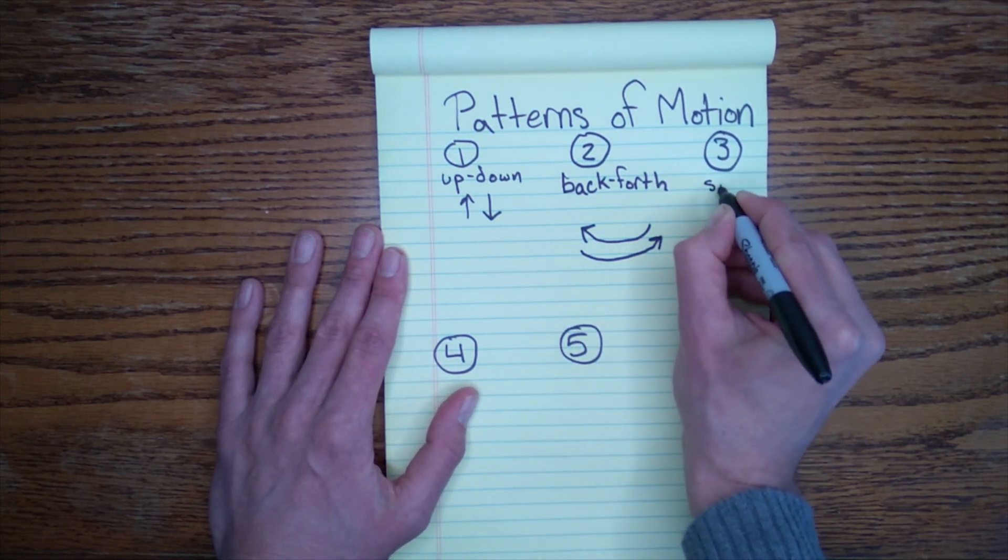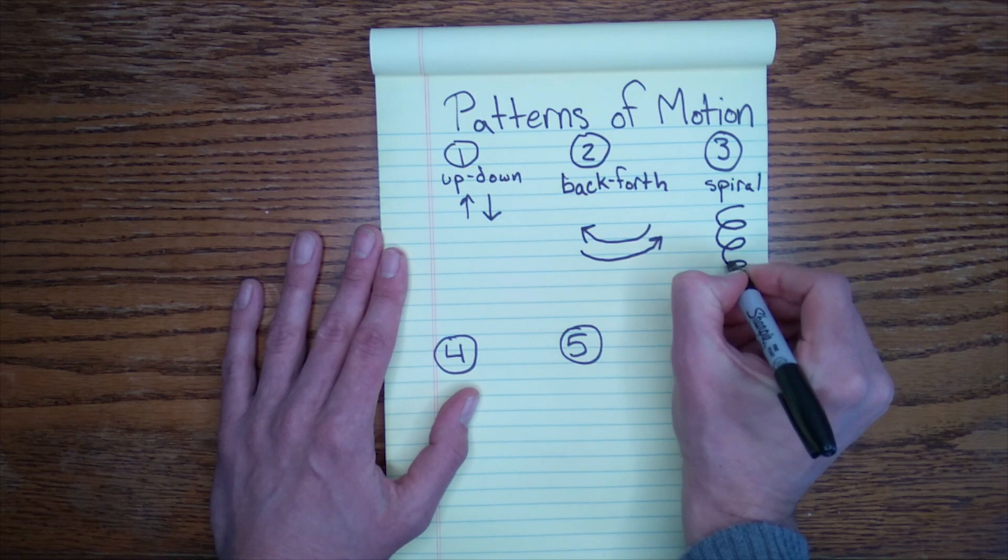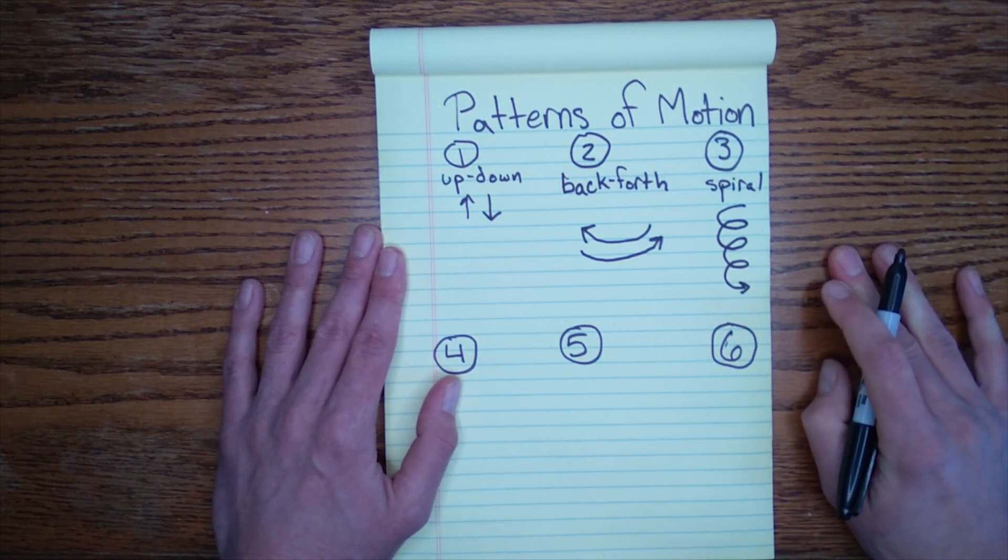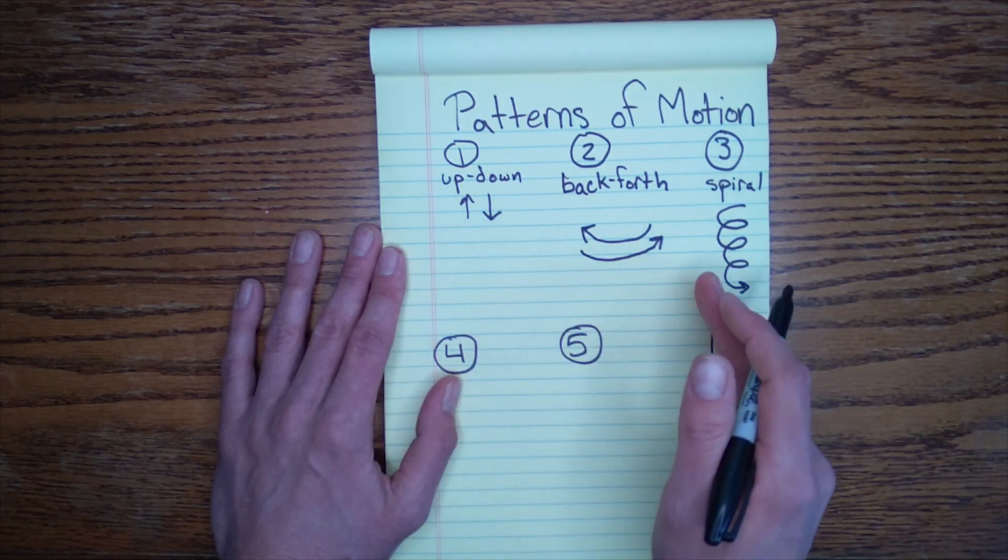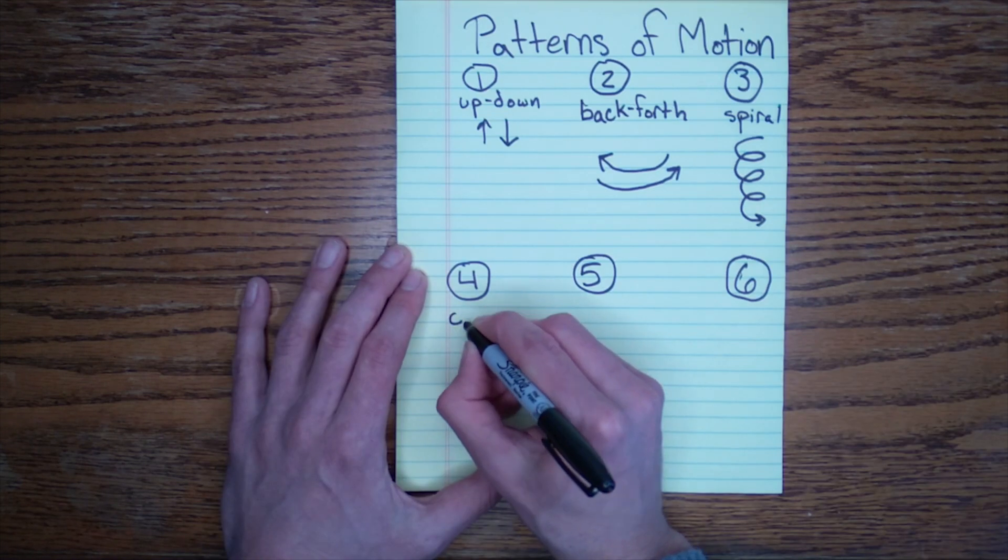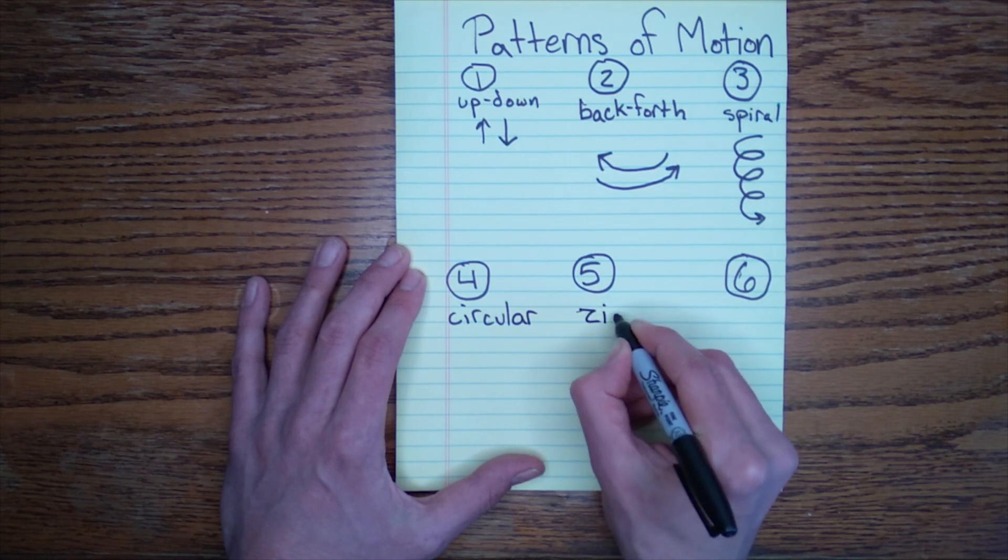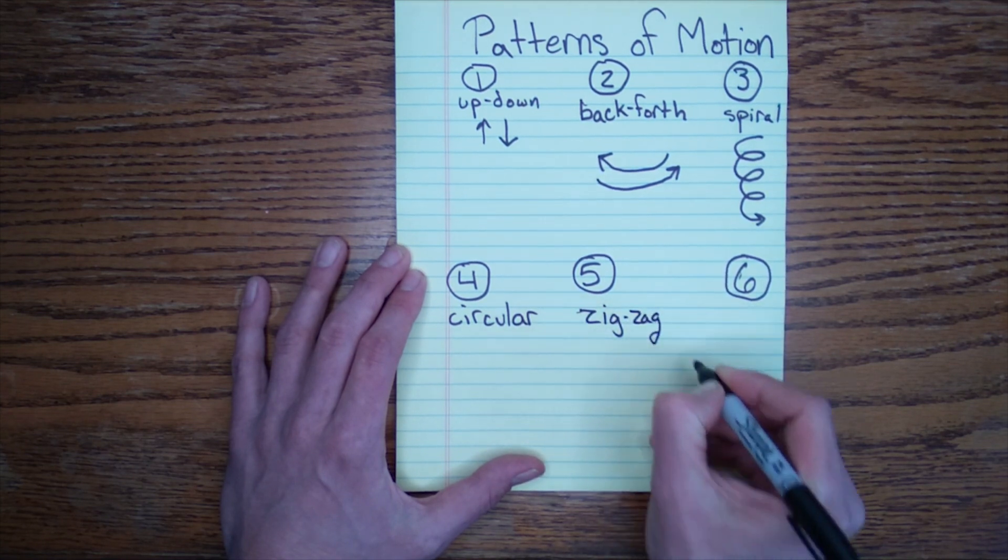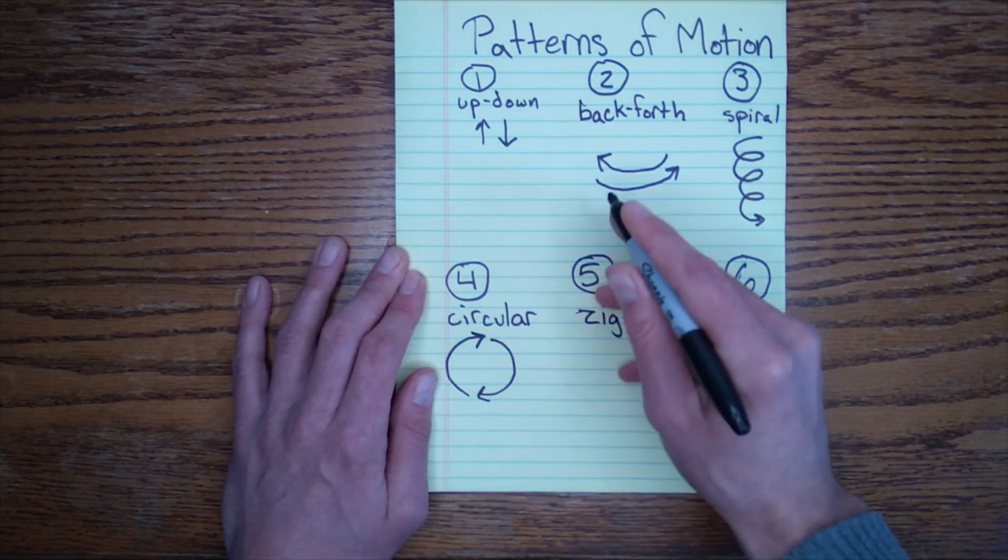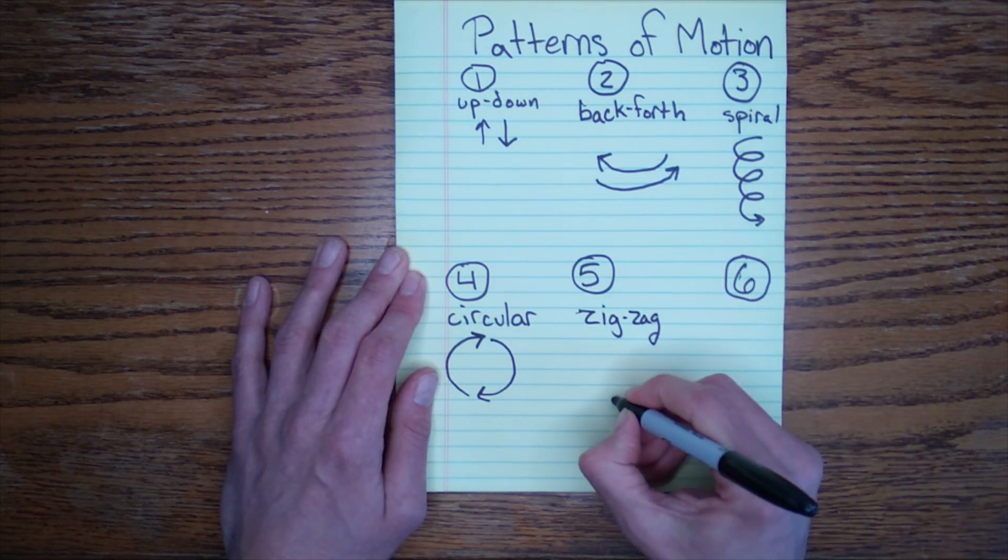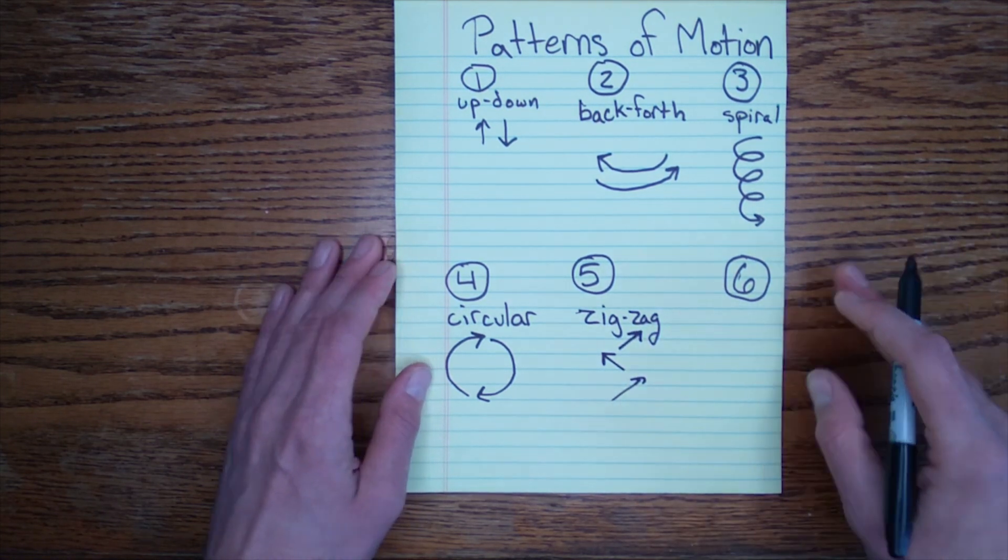Our third example was a spiral, a totally different pattern of motion. Remember, you're building this diagram with me. Number four was circular, and number five was zigzag. Yours might look a little bit different than mine. That's A-okay, that's totally fine. Not all diagrams will look exactly the same.